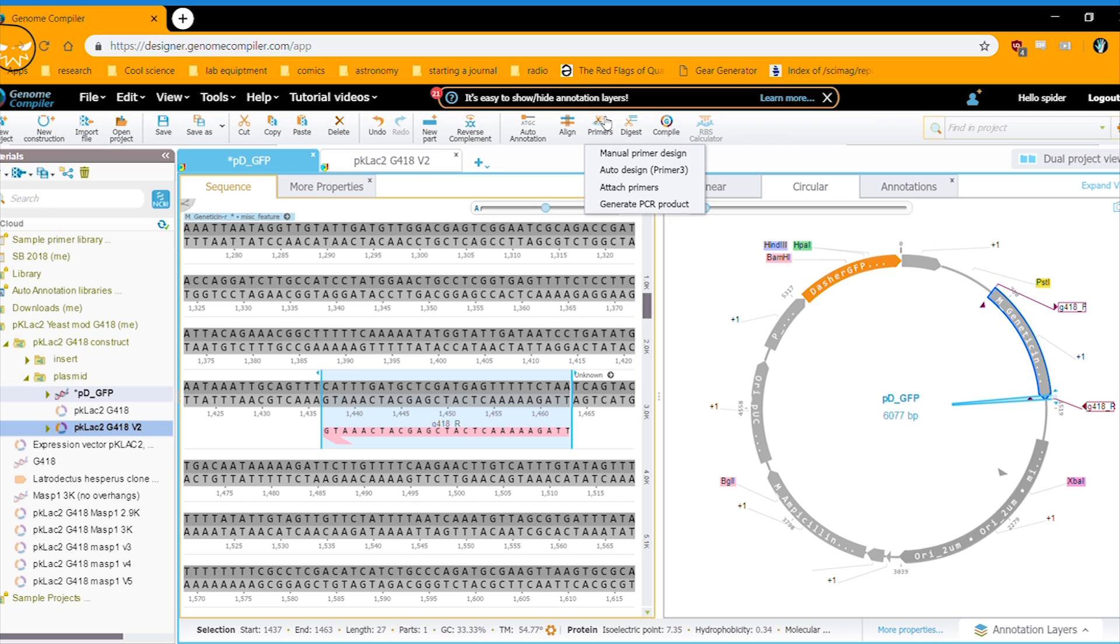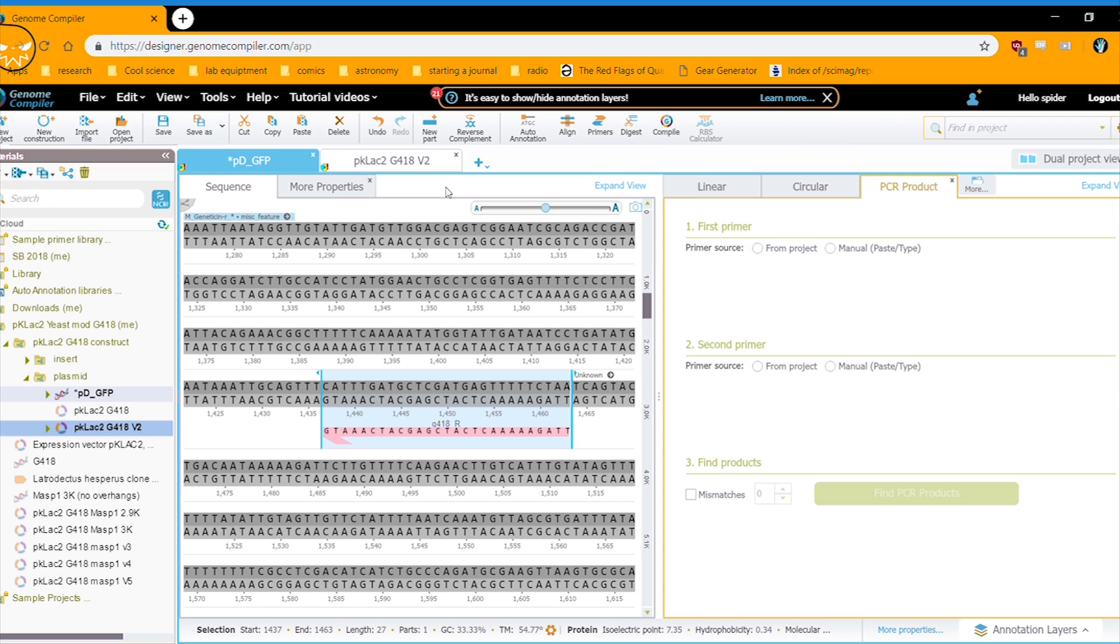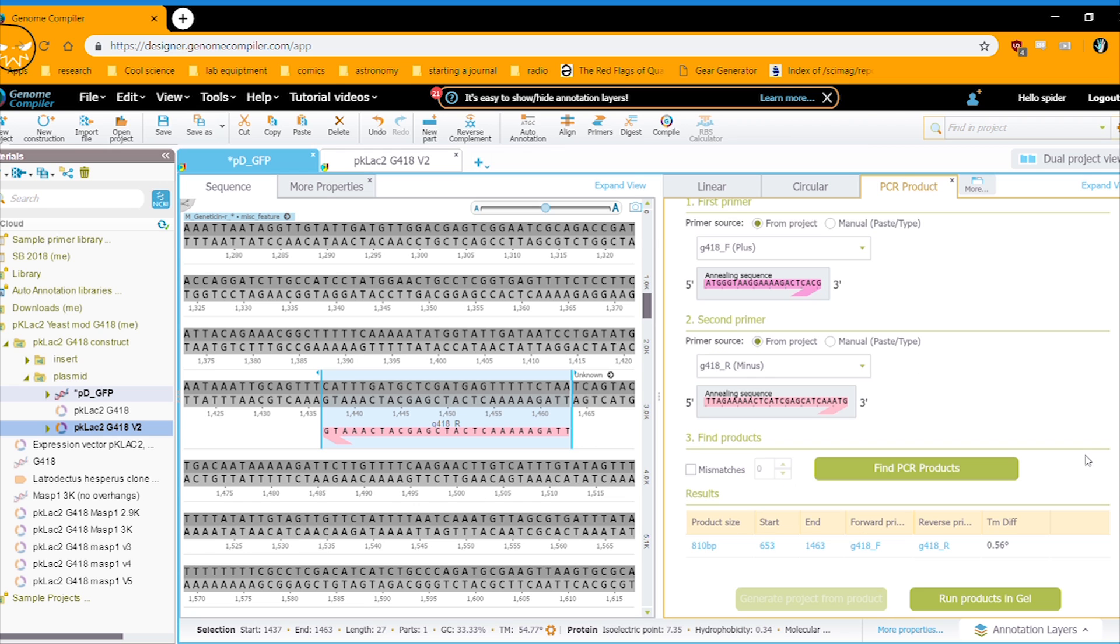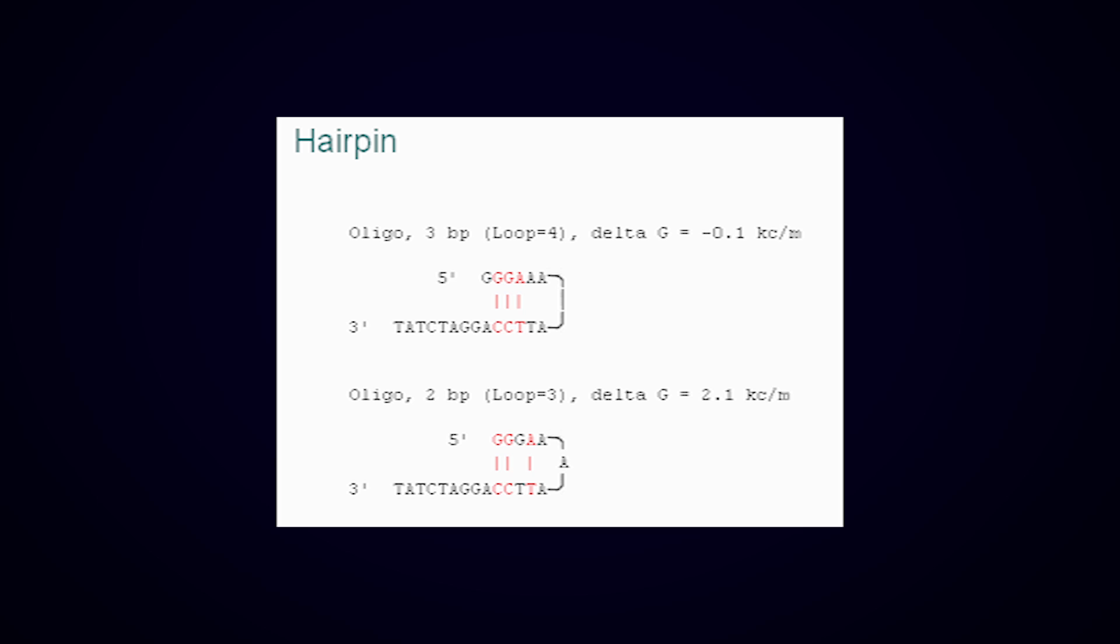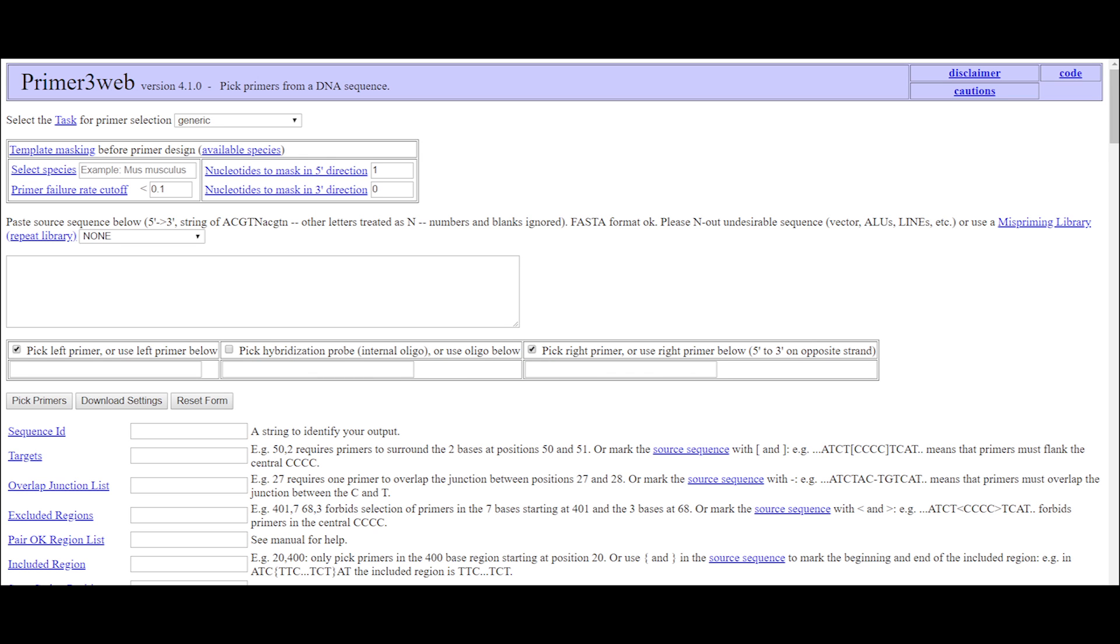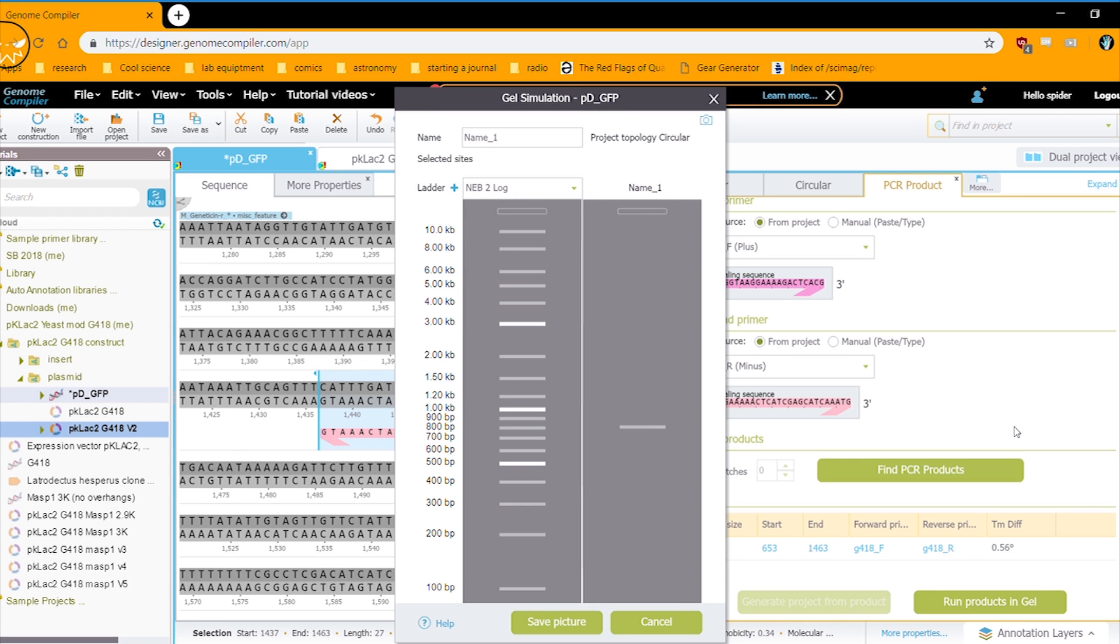Once that's done we can simulate our reaction by going to the primers menu and clicking generate PCR product and selecting our newly designed primers. The reason we do this is because sometimes when you design primers they can accidentally stick to something they're not supposed to if they're too similar to another sequence. Or they may stick to each other and form what's called a primer dimer. Both of these are bad, so by simulating we can essentially check and make sure that won't happen. Another thing that can go wrong is a hairpin, where the primer can bend back on itself and stick to itself, making it totally useless. Genome compiler doesn't check for most of this, but it does give you the option to be redirected to a site called Primer3, which does. But when we ran ours it shows only a single perfect product.